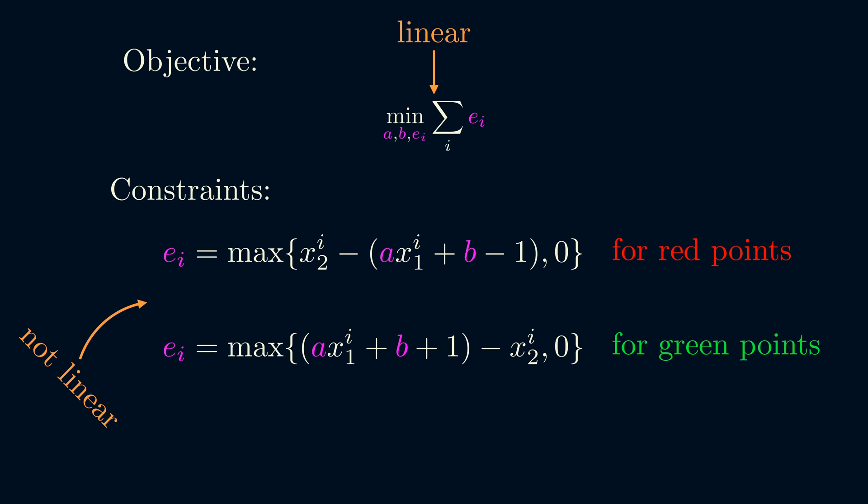For the constraints, notice that we can change the equal signs to greater than or equal to, and this is because we're minimizing ei in the objective. This doesn't change the optimal solution.